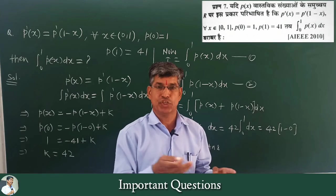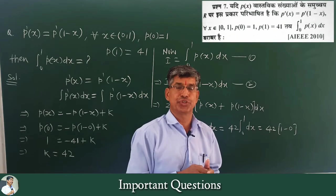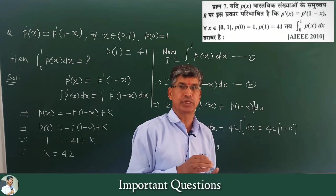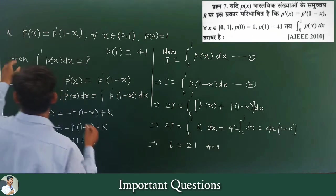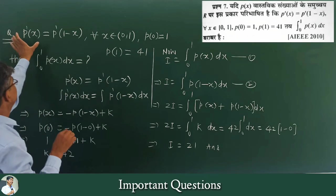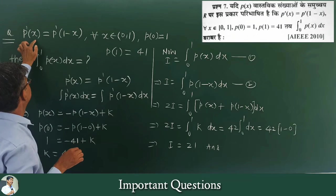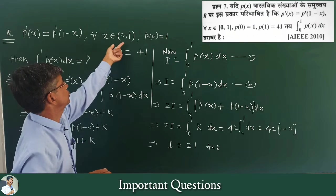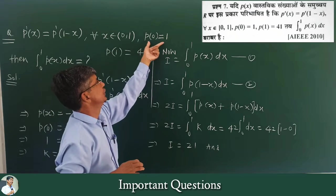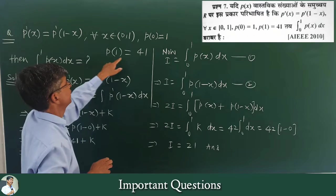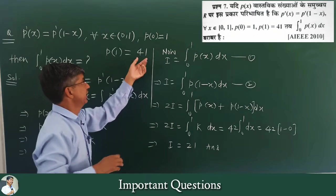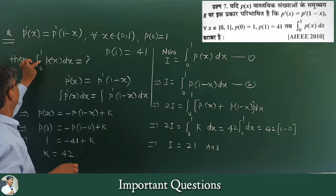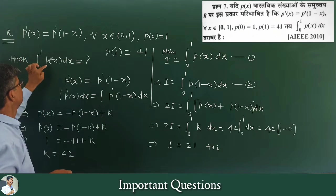The next question of integration is a wonderful question asked about RPC and all competitive exams. The given condition is p(x) = p(1-x) for every x, with p(0) = 1 and p(1) = 41. We need to find the integration from 0 to 1 of p(x)dx.